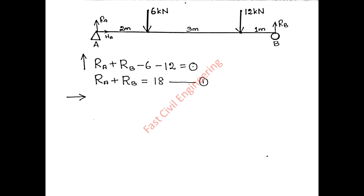Second equilibrium equation: summation of horizontal forces equals zero. Since there are no horizontal loads, we can directly say HA equals zero. That is Equation 2.